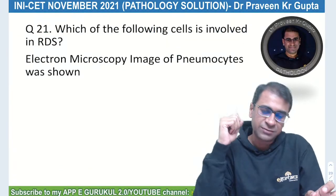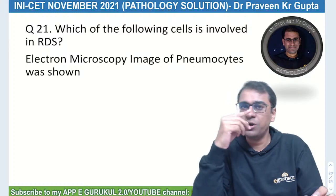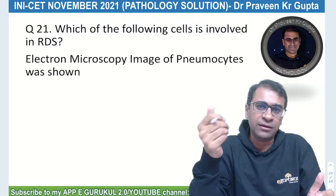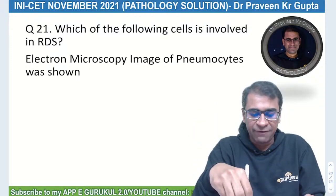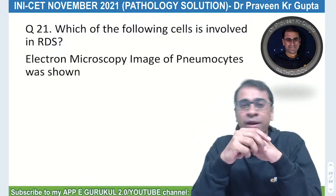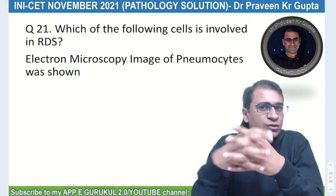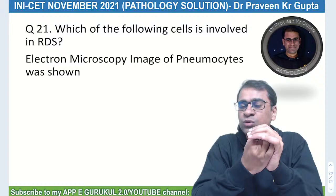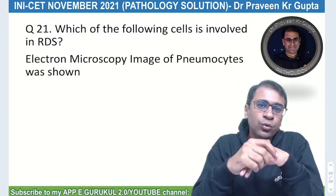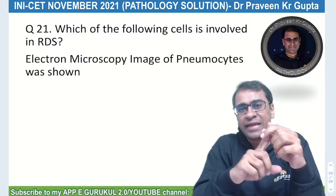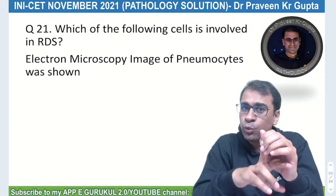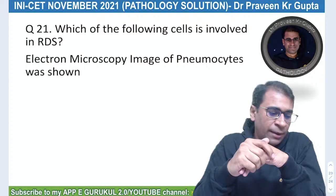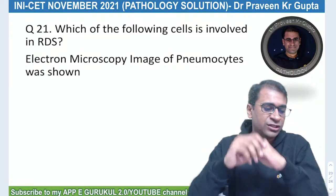Cells involved in respiratory distress syndrome (RDS) — an electron microscopy image was given. In RDS, type 1 pneumocytes are initially damaged. Type 2 pneumocytes are not damaged initially; they are damaged at a later stage. This question appears to be a repeat of a previous year COVID-related scenario question.